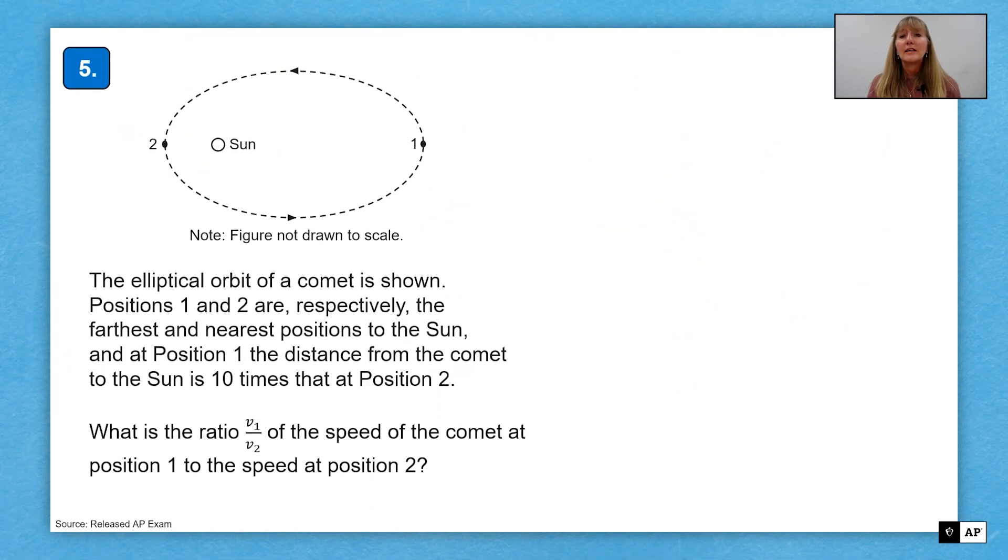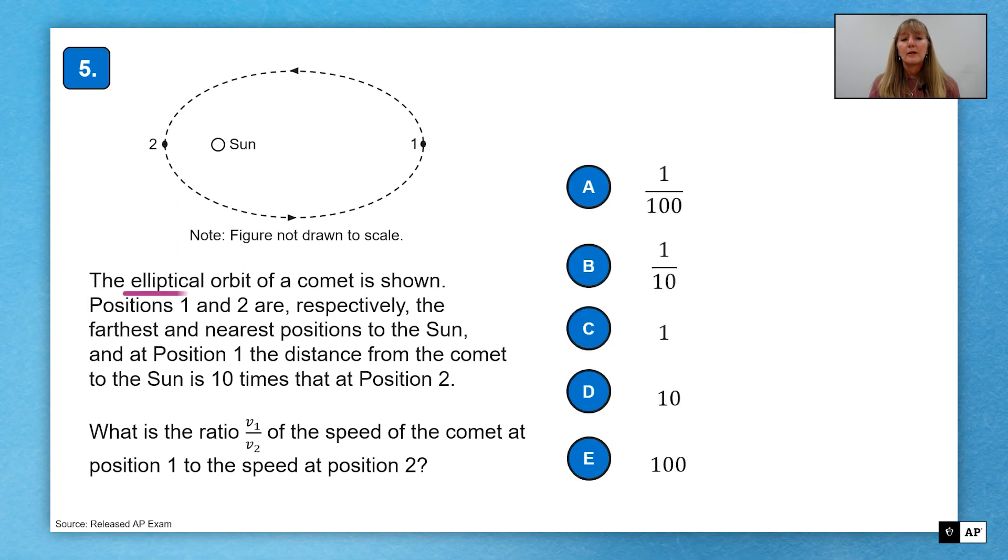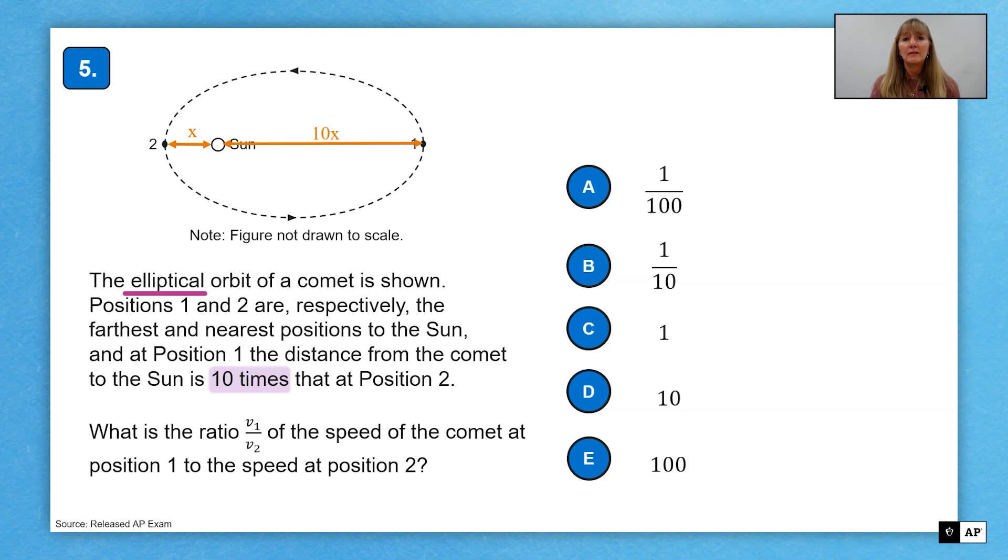All right, let's look at a different type of question. Sometimes on the multiple choice, we have a stem that is similar or the exact same for multiple questions. So here's a situation where I have an elliptical orbit of a comet around the sun. Positions 1 and 2 are shown. And position 1 is 10 times as far away as position 2. So what I'm going to do is say that from the sun to position 2 is a distance of x. And from the sun to position 1 is a distance of 10x.